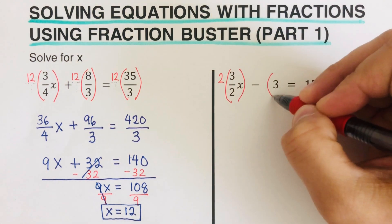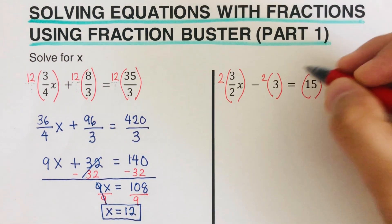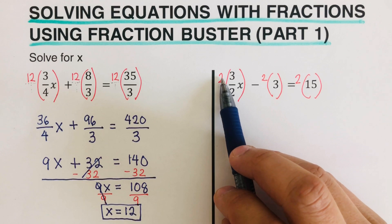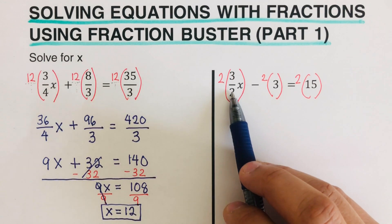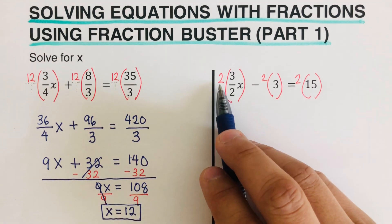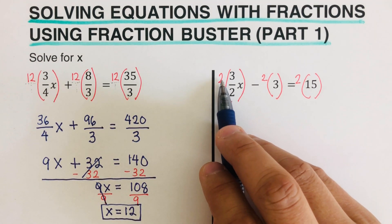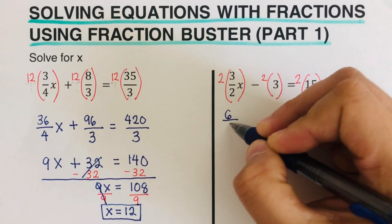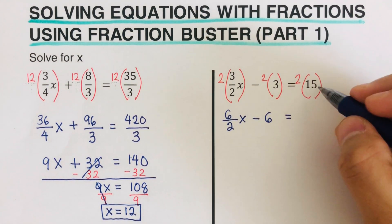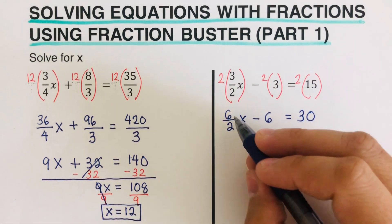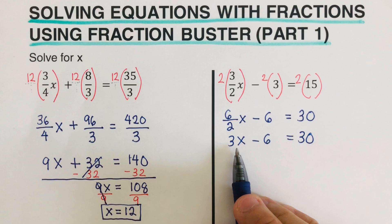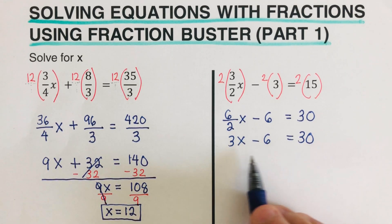We multiply all terms by 2, including the 15. Remember, we only multiply across numerators — 2 times 3 is 6 over 2, giving us the x term; then minus 2 times 3 is 6; and 2 times 15 is 30. Simplifying: 6 divided by 2 is 3, so we get 3x minus 6 = 30. At this point we already have an equation without fractions, which is easier to solve.